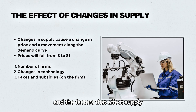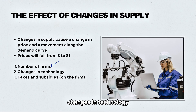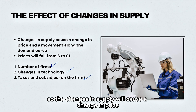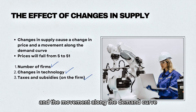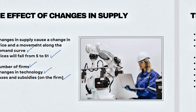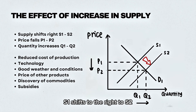The second factor that can change prices is supply. The factors that affect supply were discussed in chapter 2.3, and this includes the number of firms, changes in technology, and favorable taxes and subsidies. Changes in supply will cause a change in price and a movement along the demand curve.